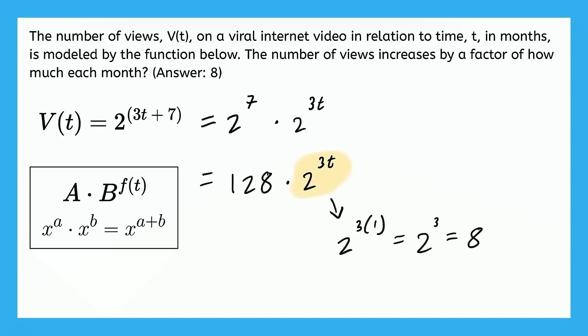Right? Because 2 times 2 times 2 is 8. Okay, real quick, before we talk about what to do with the 8, let's just talk about what happens if t is 0. Well, that makes this entire exponent 0, which makes this entire expression on the right into 1. So 128 times 1, or 128, is the number of views when time is 0, before we start analyzing.